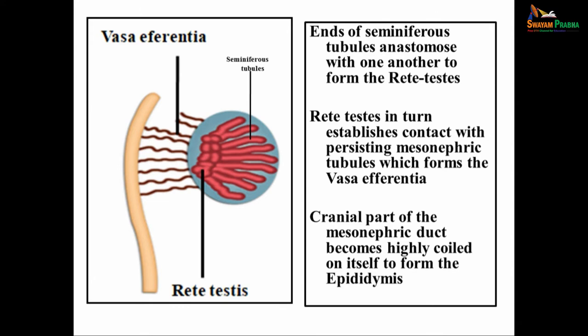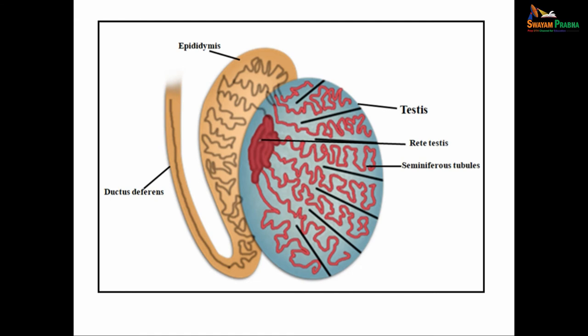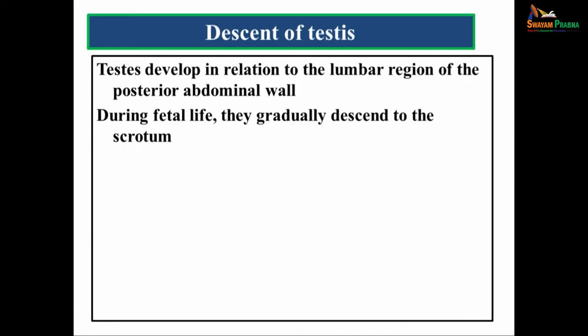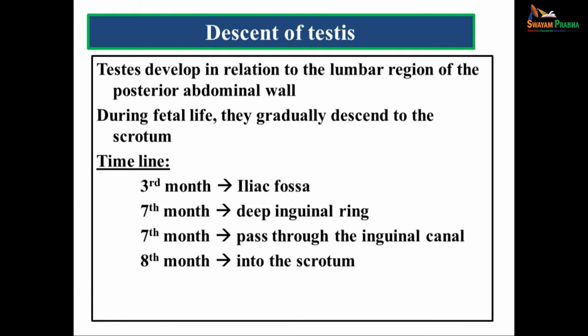The testes develops in the lumbar region of the posterior abdominal wall and during fetal life gradually descends to the scrotum. By the third month it reaches the iliac fossa, by the seventh month it reaches the deep inguinal ring and passes through the inguinal canal, and by almost the eighth month it enters into the scrotum.